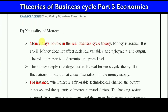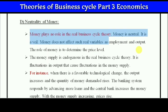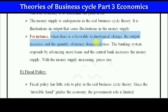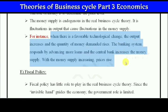Neutrality of money: real business cycle also assumes that money plays no role in the business cycle. Money is neutral — it does not affect real variables. For example, when there is a favorable technological change, output increases and the quantity of money demanded rises. The banking system responds by advancing more loans, the central bank increases the money supply, and with money supply increasing, prices increase.